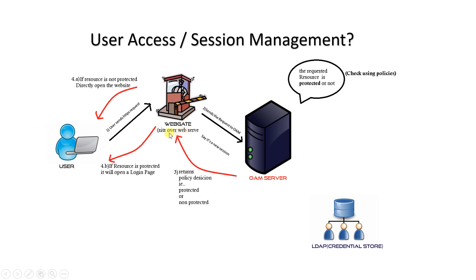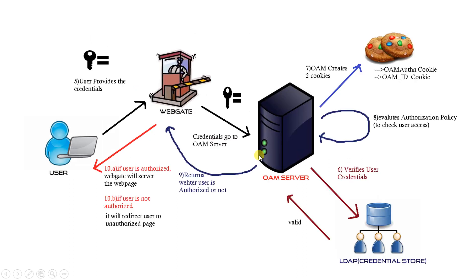called a web gate, which sits over your web server. Here it will check a few things. This request is sent to the authentication server or your Facebook server. The Facebook server will decide whether this website is protected or not — meaning whether this website requires some credentials. If credentials are required, a login page will be shown to the user.